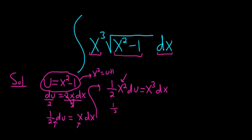So this is 1 half u plus 1, that's x squared, du equals x cubed dx. Beautiful stuff.